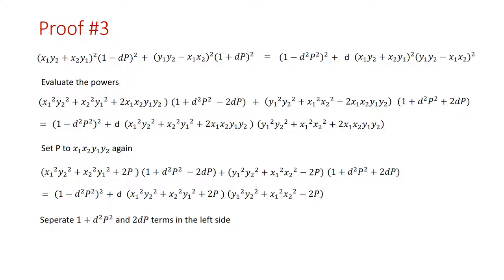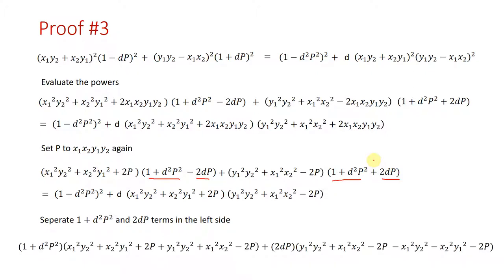Evaluating the parentheses, x1·x2·y1·y2 appears again, so we set p to that again. The left side includes one plus d squared p squared as a multiplier, along with two times dp values — one with a minus sign and one with a plus sign. Separating the terms, we have one plus d squared p squared as one multiplier, and two times dp as another multiplier. The plus 2p and minus 2p terms will cancel to zero.